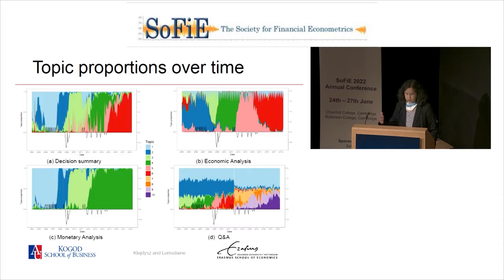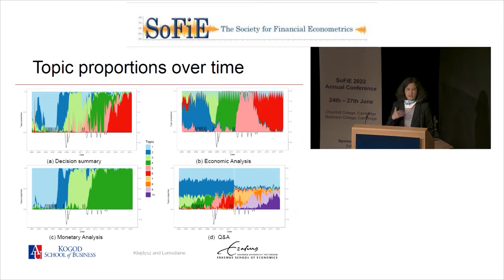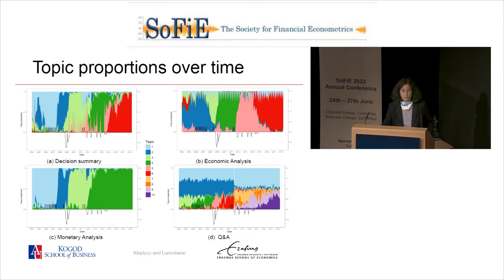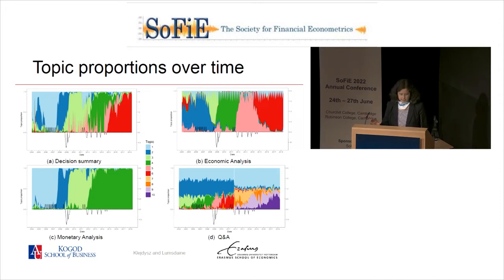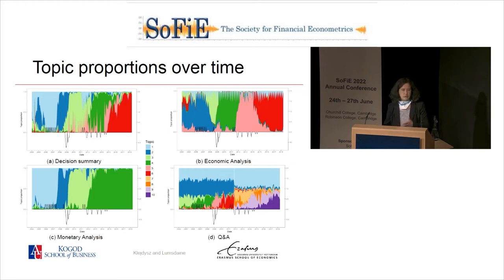This visualization shows how topics evolve over time for four sections of the ECB policy statement. LDA is a bag of words, so there's nothing imposing any chronology in the identification of topics—yet you can see that topics clearly emerge and wane over time. Something very striking is the Q&A section in the bottom corner: that's the unscripted part of the ECB statement, and you can clearly see the structural break in the transition from Trichet to Mario Draghi.